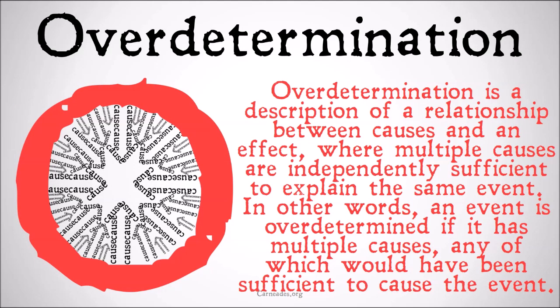Over-determination is a description of a relationship between causes and an effect, where multiple causes are independently sufficient to explain the same event. In other words, an event is over-determined if it has multiple causes, any of which would have been sufficient to cause that event. Note, this is the definition of over-determination for analytic philosophers, which is what we're going to cover for most of the video.